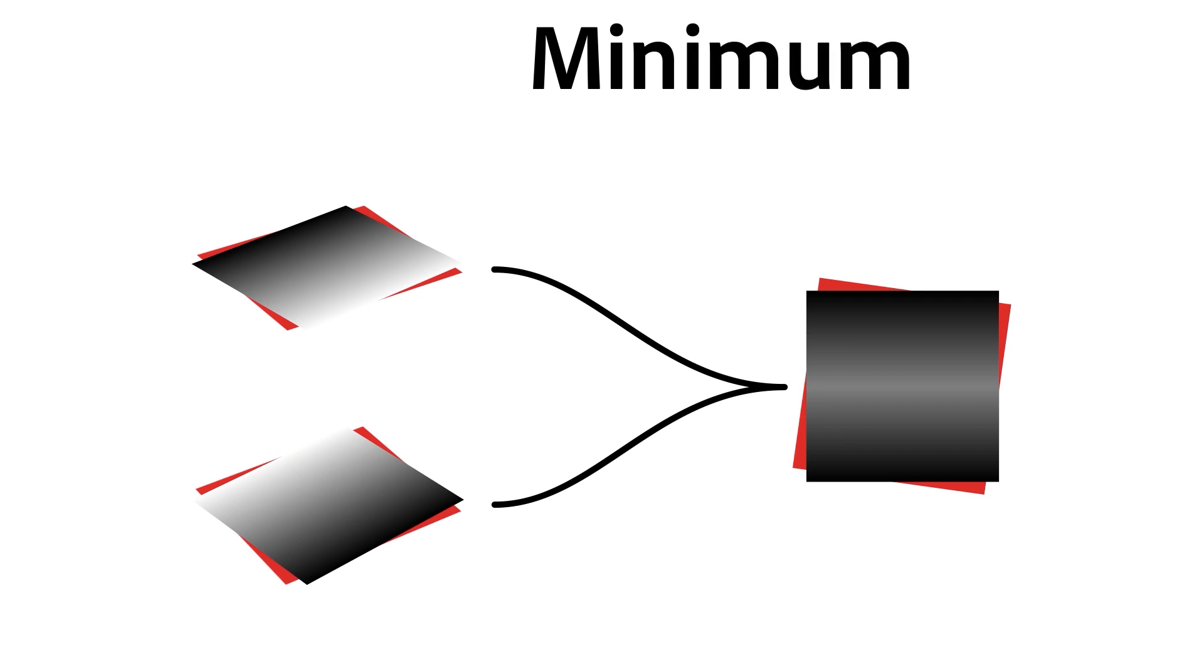Min stands for minimum. It picks the lowest value from either the top or the bottom component. That means Min's results are never affected by low dynamic range. You won't see any artifacts.